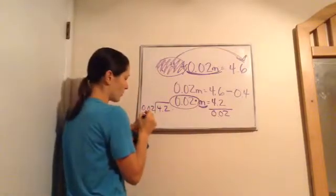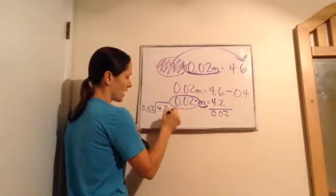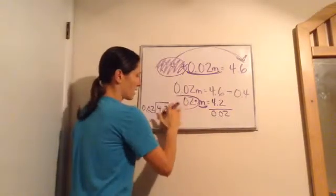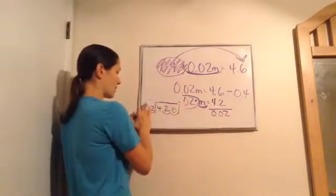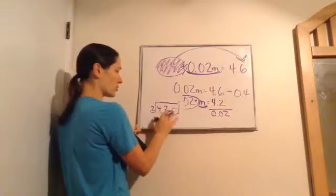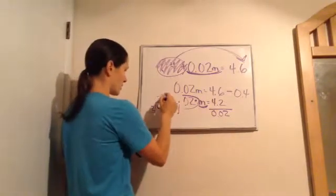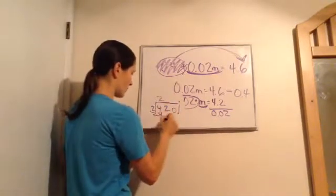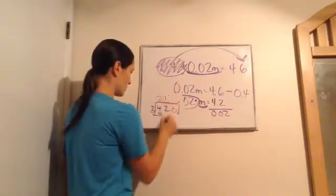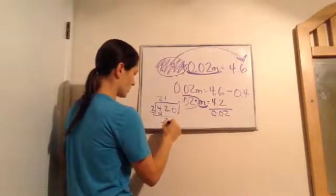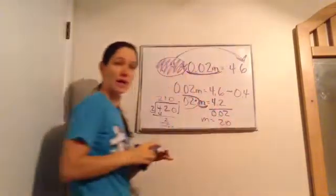Right? And then, we'll move our decimal 1 to 2. We'll move our decimal 1 to 2. Add our 0 in there. This is kind of getting in the way. Move my decimal up. And then, we end up getting 2 goes into 420. So, that's going to end up being 210. So, m equals 210. Got it?